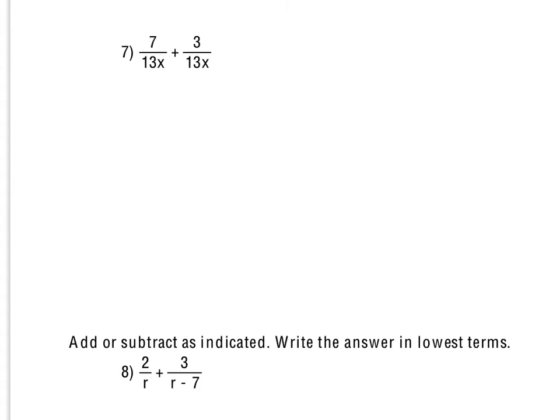For number 7, we're adding these rational expressions together. In this case, they already have a common denominator, so we can just add the numerators. 7 plus 3 is just 10, so we get 10 over 13x. You would reduce if you could. This, however, does not reduce, so that is all we do with that.